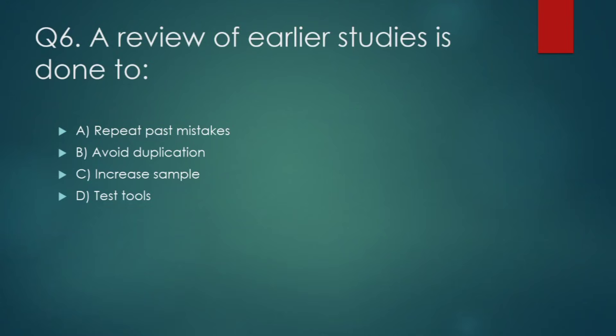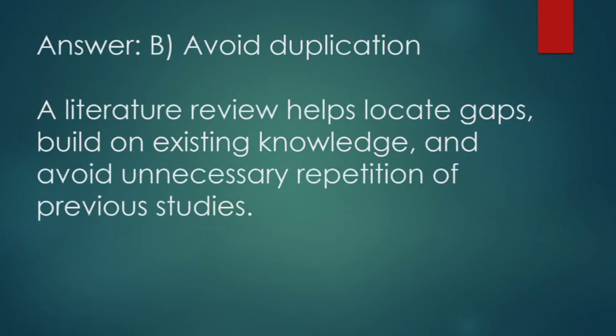A review of earlier studies is done to: (A) repeat past mistakes, (B) avoid duplication, (C) increase sample test tools. Correct answer: option B — avoid duplication. A literature review helps locate gaps, build on existing knowledge, and avoid unnecessary repetition of previous studies.